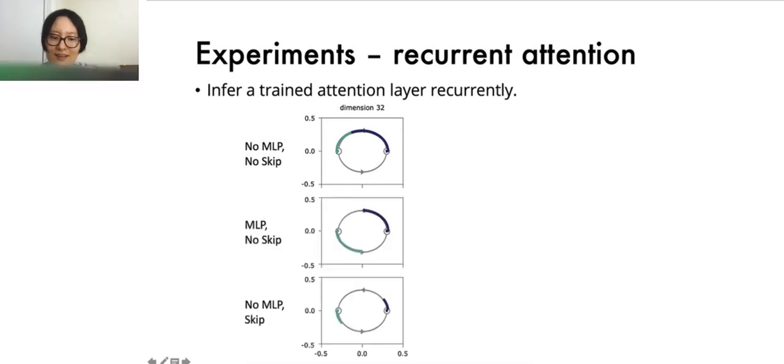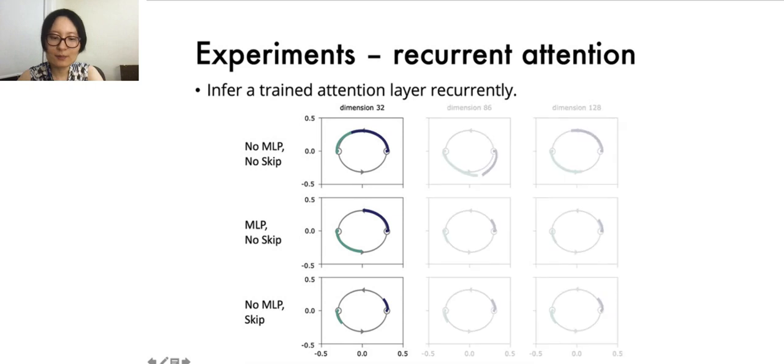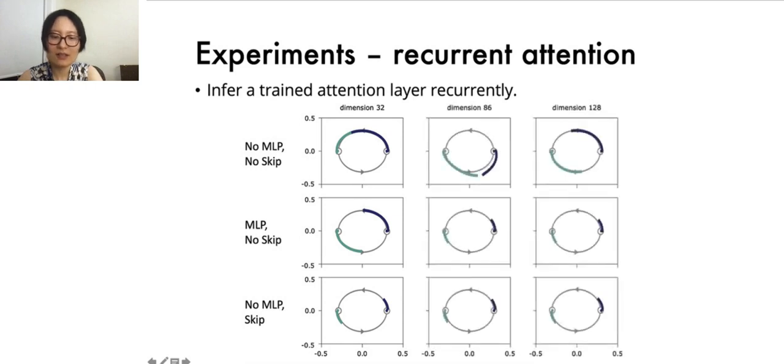Even more interestingly, these bottom two plots show that adding either MLP or skip connections is able to stop or drastically slow down rank collapse. Furthermore, the theory predicts that a larger hidden dimension slows down rank collapse, which is confirmed experimentally on the top row in the right two panels. Note that the effects of adding MLP and skip connections persist in these cases.